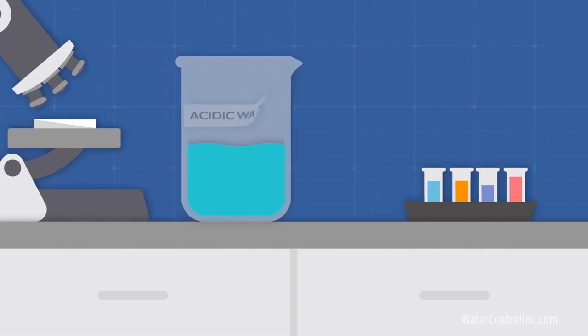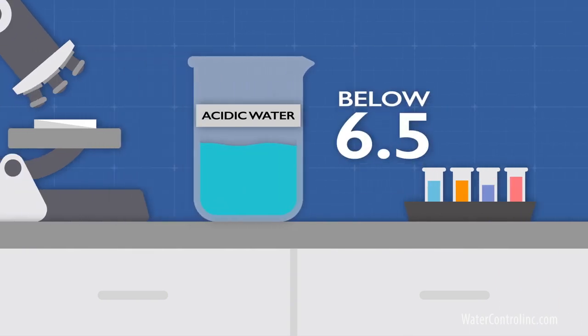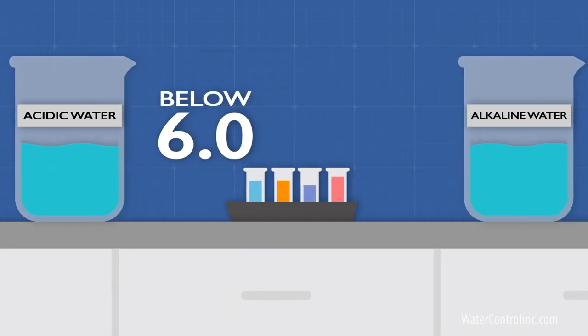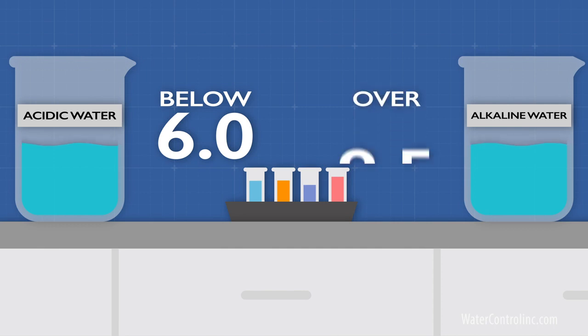Acidic water is a problem. It corrodes piping, valves, fittings, and equipment. Problems can start when pH falls below 6.5, and will be significant when it falls below 6.0. Alkaline water can also be corrosive, particularly if the pH rises over 9.5.